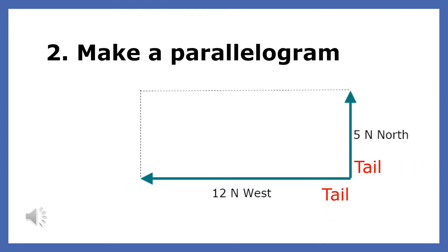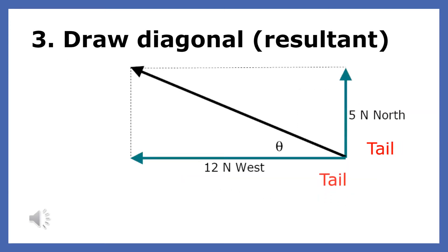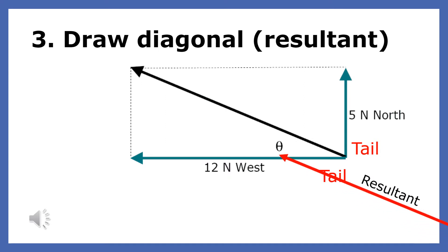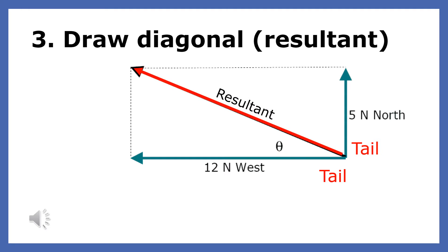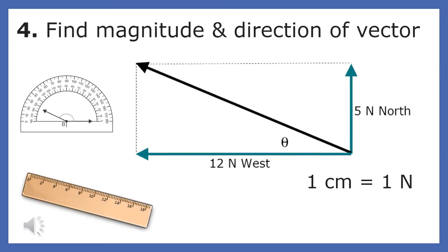The next step to finding the resultant of these two forces is to create a parallelogram by adding two dotted lines parallel to the force vectors. The resultant is drawn from the tails of the two vectors to the other side of the parallelogram. We have a drawing of the vector, but now we need to find the vector's magnitude and direction. Since we've drawn the two vectors to scale, all we have to do to find the magnitude of the resultant is to measure the length.